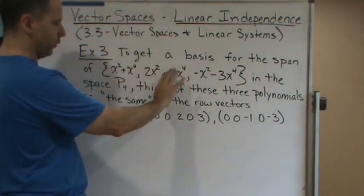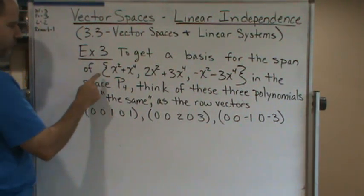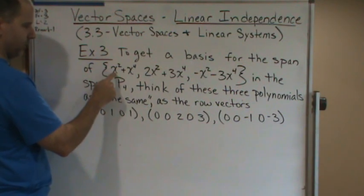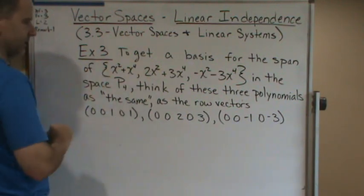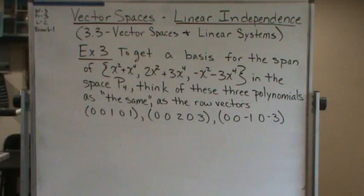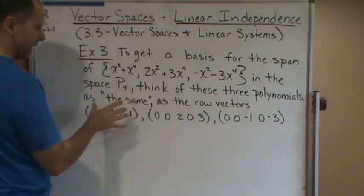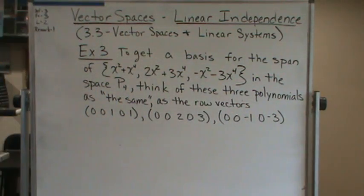So think of these three polynomials as row vectors. Because if you think about it, you've got the constant term, and you've got the x term, then you've got the x squared term, x cubed, and so on. You can think of these as, quote unquote, the same as row vectors. And hopefully you can see the connection between this and this, this and this, and this and this, based on what I just said.